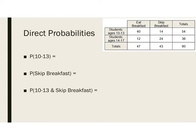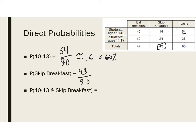Here are a couple of examples. For 10-to-13-year-olds, we look at the 40 and the 14, giving us 54 out of 90. That equals 0.6, or 60%. For skipping breakfast, that's 43 out of 90, which equals 0.47 repeating, approximately 47.8%.